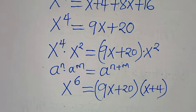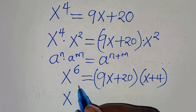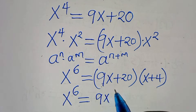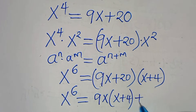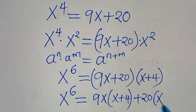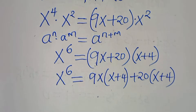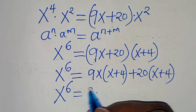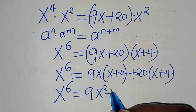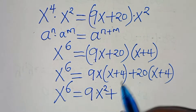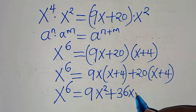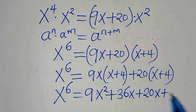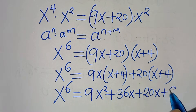This implies that x to the power of 6 equals 9x multiplied by (x plus 4), then plus 20 multiplied by (x plus 4). Expanding: 9x times x is 9x squared, plus 9x times 4 is 36x, then plus 20 times x is 20x, then plus 20 times 4 which equals 80.